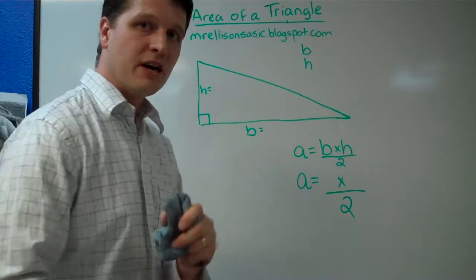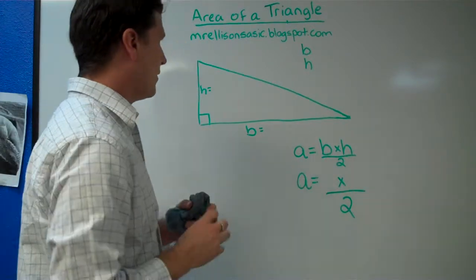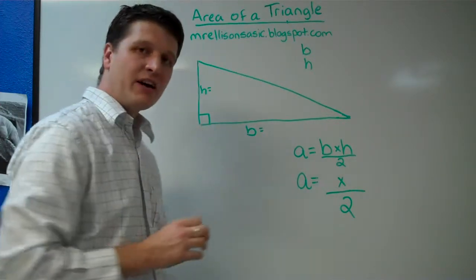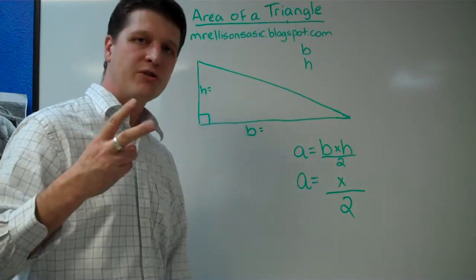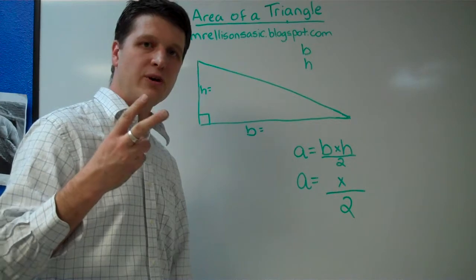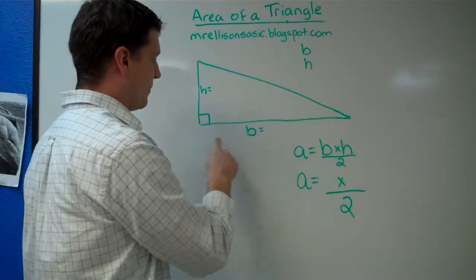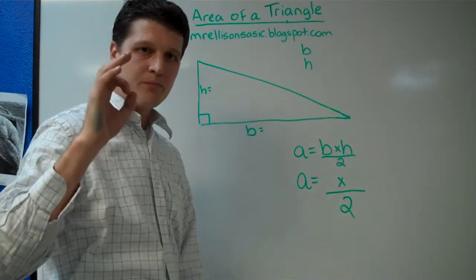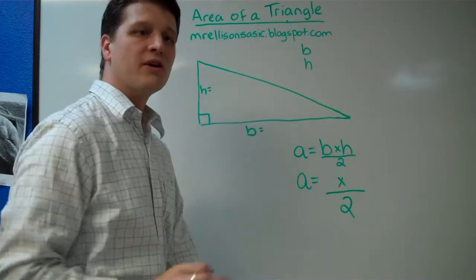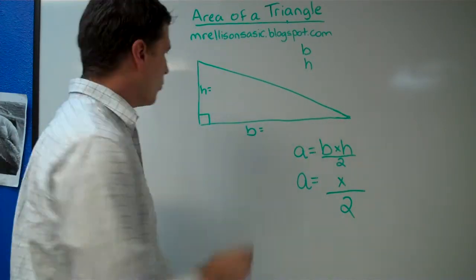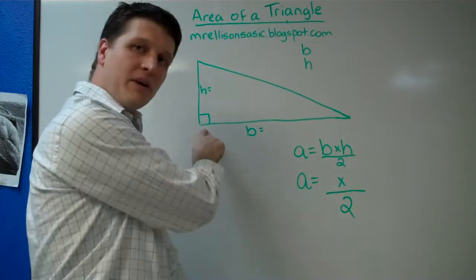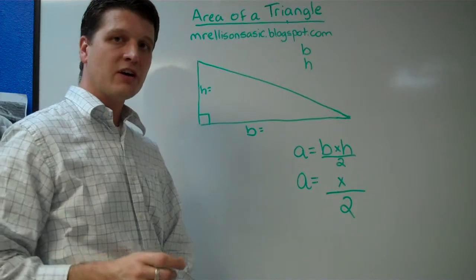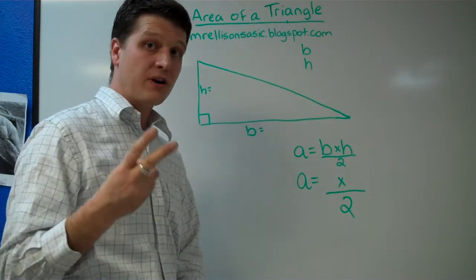We're dealing with two-dimensional figures here. And whenever we're finding the area of a triangle, we're concerned with two measurements. We're concerned with a base, which is generally the bottom side of the triangle, or it's the side where the height comes together to form a 90-degree angle. And in every triangle, we're going to have a height and a base.